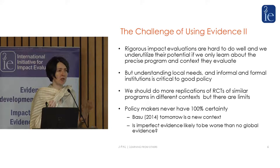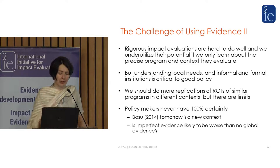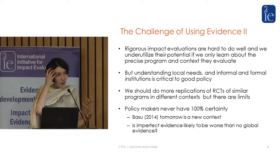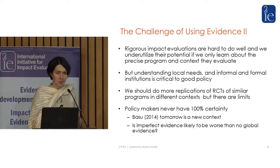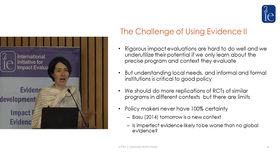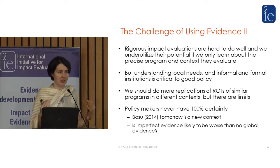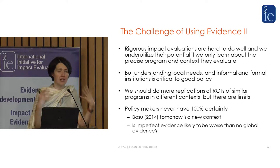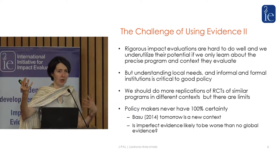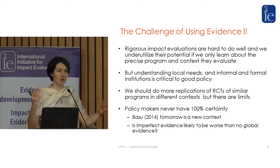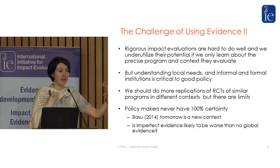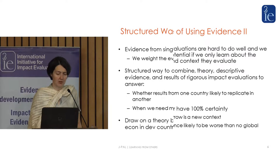Yes, we should be doing more replications to see if things work in new contexts, but we can't always do that. Part of solving this problem is to accept that we will never have a hundred percent guarantee that the decisions we make are going to be the right decisions — that's too high a standard — but we can move forward and make better decisions. I'm going to set out a framework that pulls on the global evidence base while recognizing the importance of local knowledge, and show how you put those together for better decision-making.